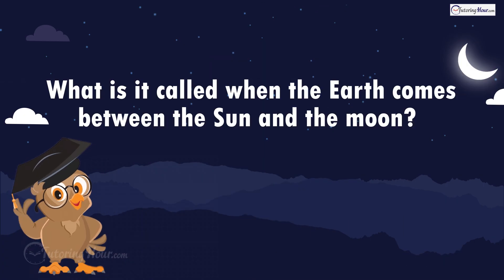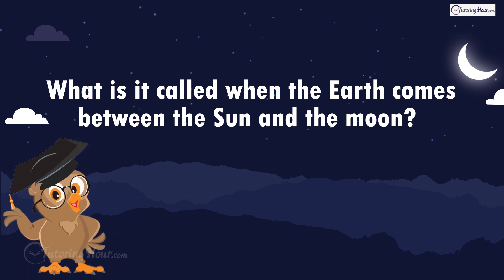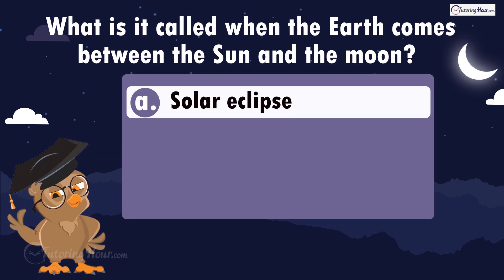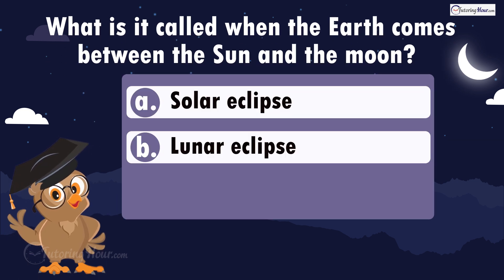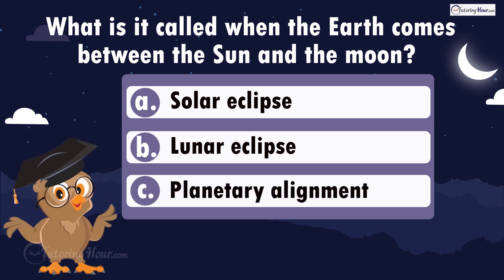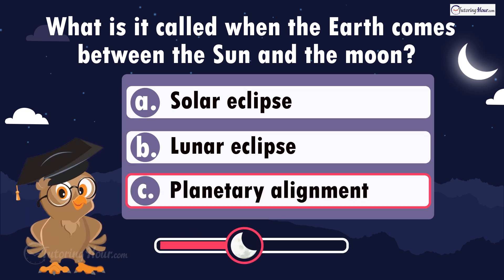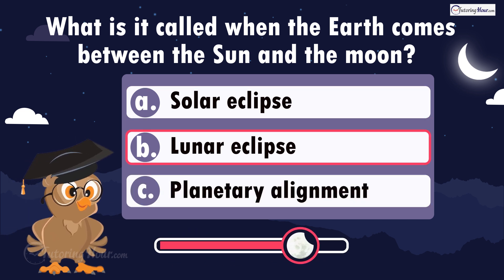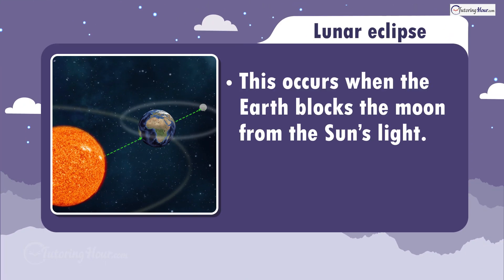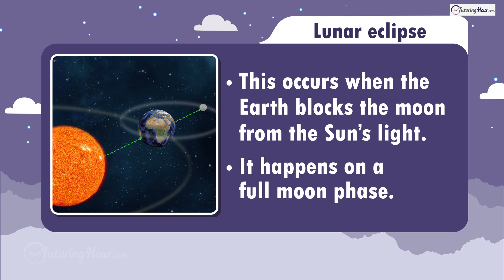What is it called when the Earth comes between the sun and the moon? Is it A, solar eclipse; B, lunar eclipse; or C, planetary alignment? The correct answer is lunar eclipse. This occurs when the Earth blocks the moon from the sun's light. It happens on a full moon phase.